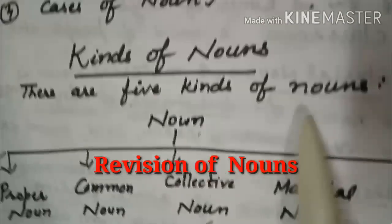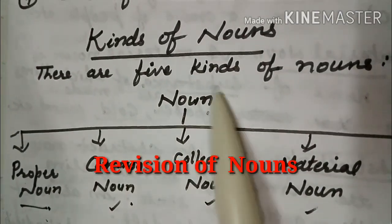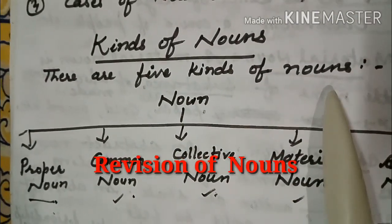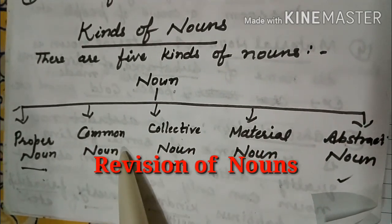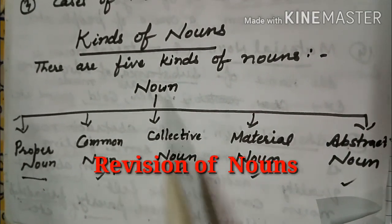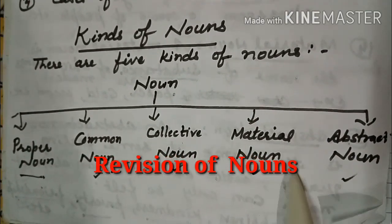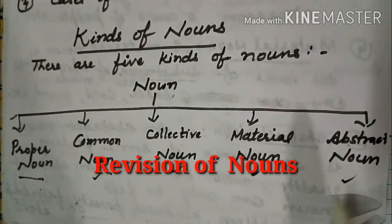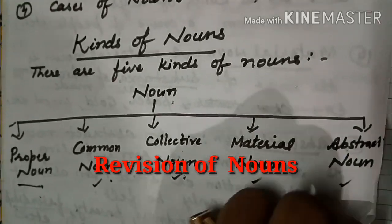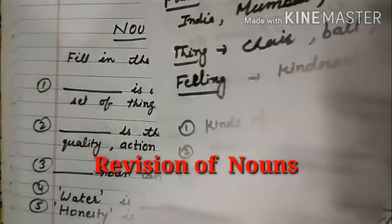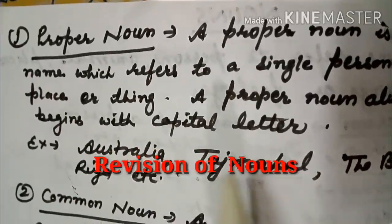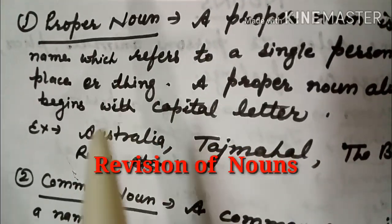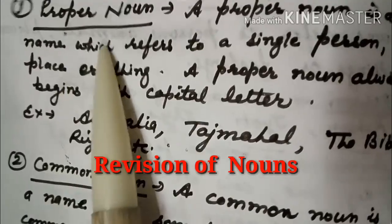Kinds of nouns — there are five kinds of nouns: proper noun, common noun, collective noun, material noun, and abstract noun. Now we will see each one by one.